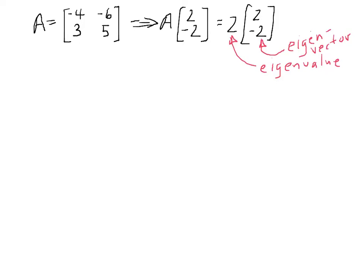In a previous video, we examined the matrix A being negative 4, negative 6, 3, 5.